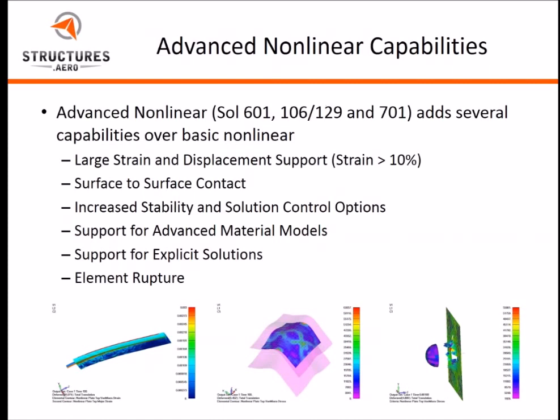What are some of the advantages of the advanced nonlinear over the basic nonlinear package? One thing is larger strain and displacement support. This is a capability in both basic and advanced, but advanced nonlinear is able to handle problems with even greater strain than 10% that might sometimes cause convergence issues with basic nonlinear. So you're going to have definitely large displacement and strain support.